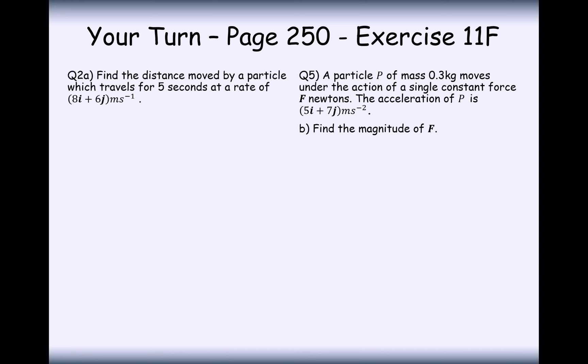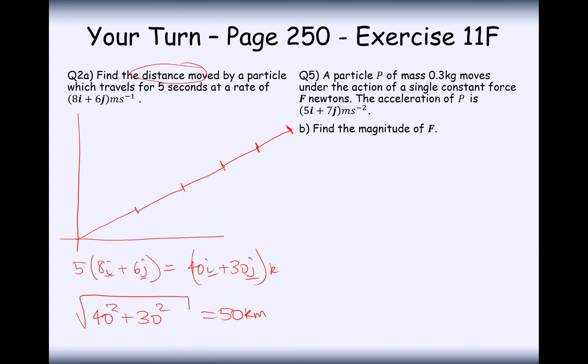Question 2A: Find the distance moved by the particle that travels for 5 seconds at a rate of 8I plus 6J meters every second. So if it's doing 8I plus 6J every second, then effectively it's moving right by 8 and then up by 6 every second. If it's doing that for 5 seconds, then it's just going to be 5 lots of that 8I plus 6J vector. So it's going to be 40I add 30J on this vector here. But now we need the distance moved by the particle. So it's going to be 40 squared add 30 squared, which is 50 kilometers. Just make sure we put the units on there.